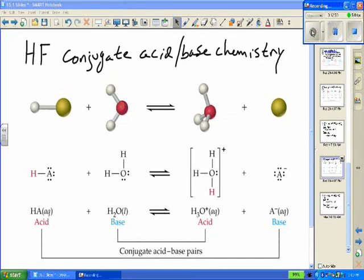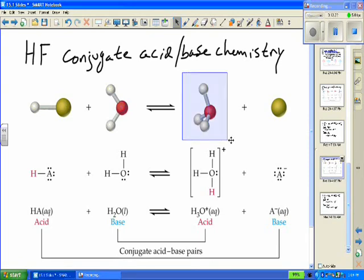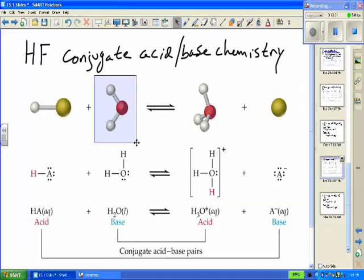Here's another example of the Bronsted-Lowry model of acids and bases. This is hydrogen fluoride, or hydrofluoric acid, when dissolved in water. Now, in the forward direction, of course, HF acts as an acid because it donates a proton and becomes F-. In the reverse reaction, F- is the conjugate base because it accepts a proton and goes back to HF. Water, in this case, notice, acts as a base in the forward direction because it accepts a proton and becomes H3O+. In the reverse reaction, the conjugate acid is H3O+, because it donates an H-plus ion to the fluorine and goes back to being water.